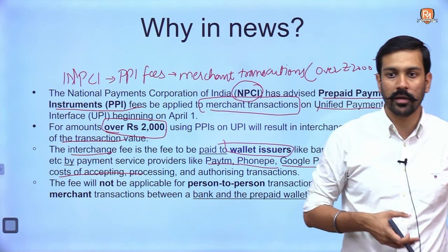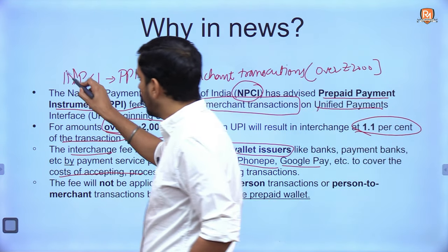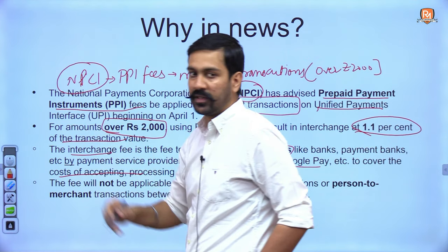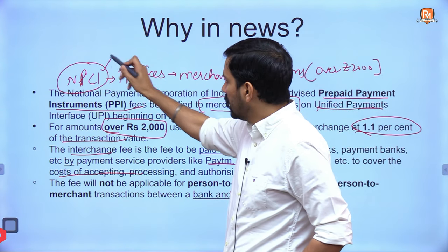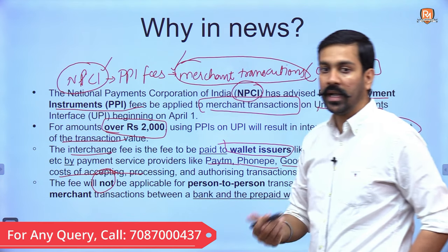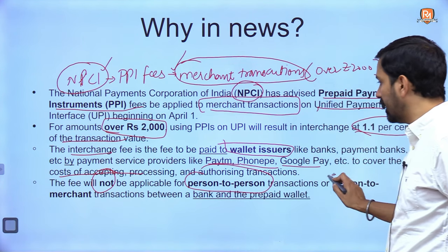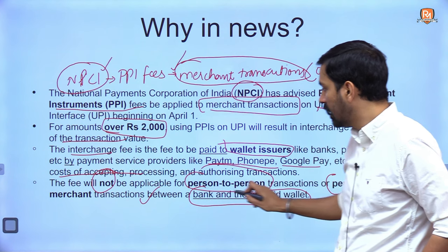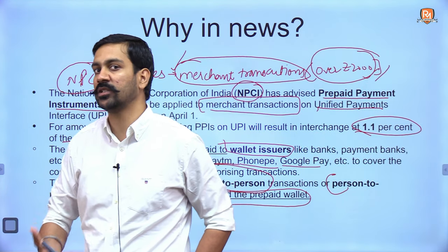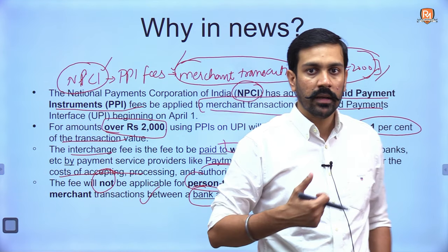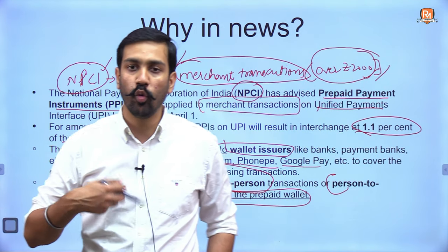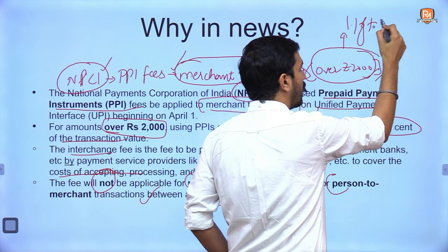From this news, a lot of prelims questions can be asked. For example: the fee has been levied by NPCI — not IBA, RBI — it's NPCI. Over what kind of transactions? It is over merchant transactions. Keep in mind, it is not applicable for person-to-person or person-to-merchant transactions that happen between a bank and a prepaid wallet, and it applies over amounts that are over rupees 2000 at 1.1% of the transaction value.